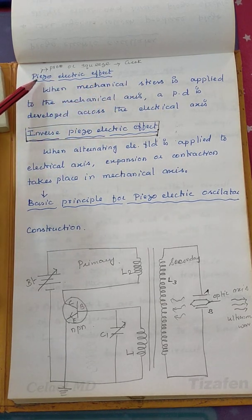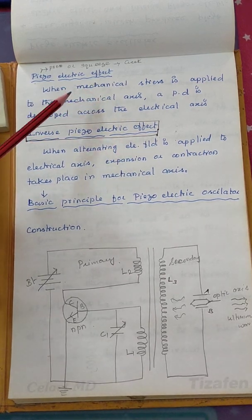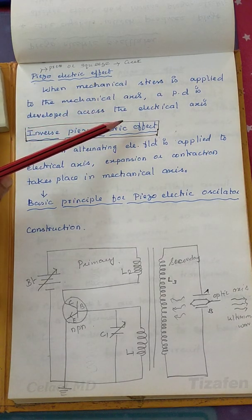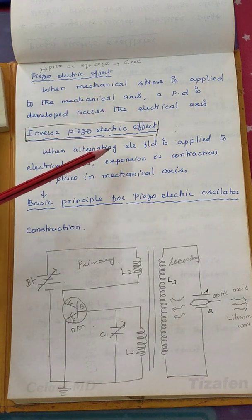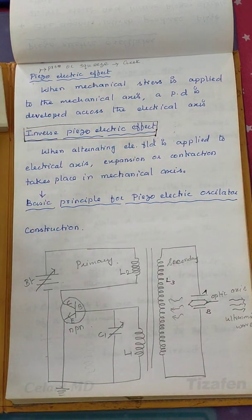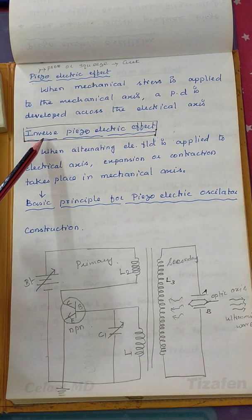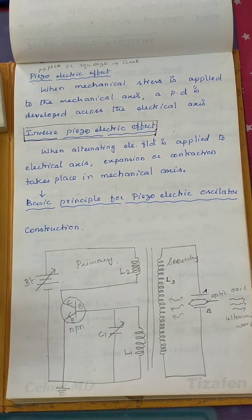When mechanical stress is applied to the mechanical axis, a potential difference is developed across the electric axis. The vice versa also happens — when a potential difference or electric field is applied along the electric axis, expansion or contraction takes place. This is what we call the inverse piezoelectric effect, which is the basic principle used for a piezoelectric oscillator.